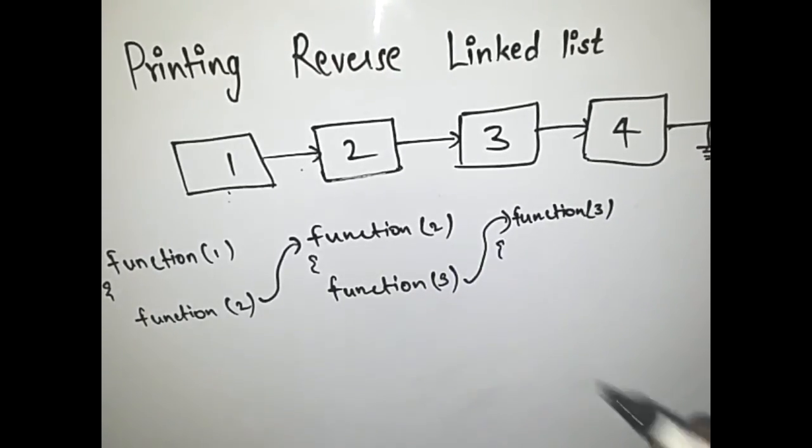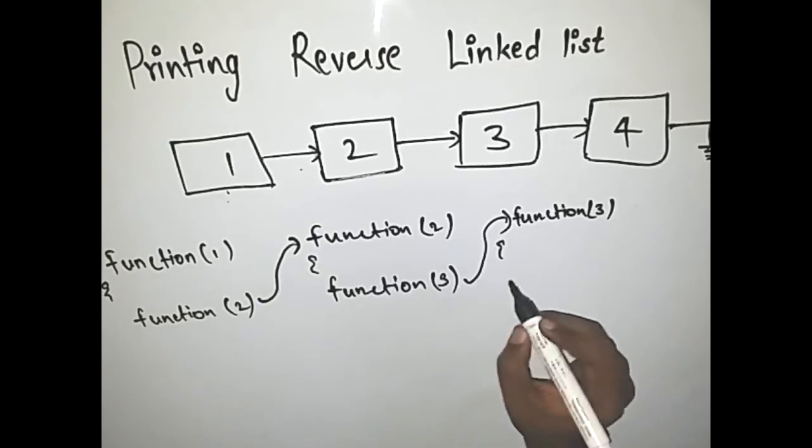Now again we check if the next of the third node is null or not, which is not the case here. So we call the fourth node.